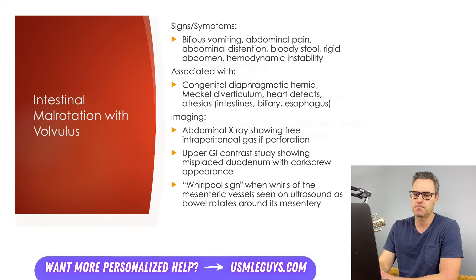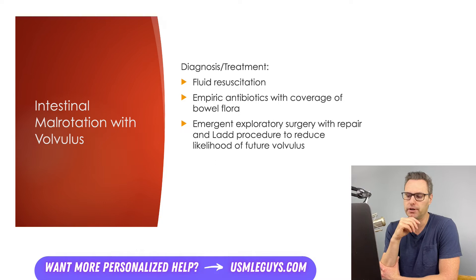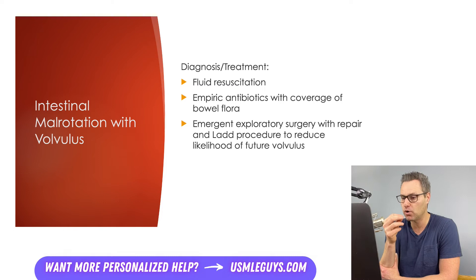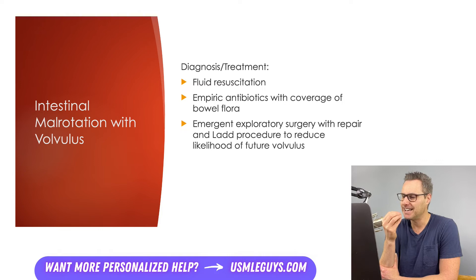Intestinal malrotation with volvulus is confirmed with emergent exploratory surgery. First, the patient must be resuscitated with fluids and started on empiric antibiotics with coverage of bowel flora in case of perforation. Once done, emergency exploratory surgery with repair is performed using the Ladd procedure. This involves placing adhesive bands over the mesentery to widen the base of the mesentery and reduce the likelihood of a future volvulus. The malrotation itself cannot actually be corrected.